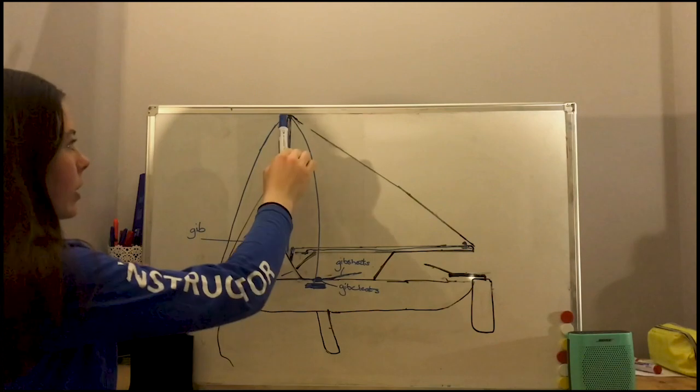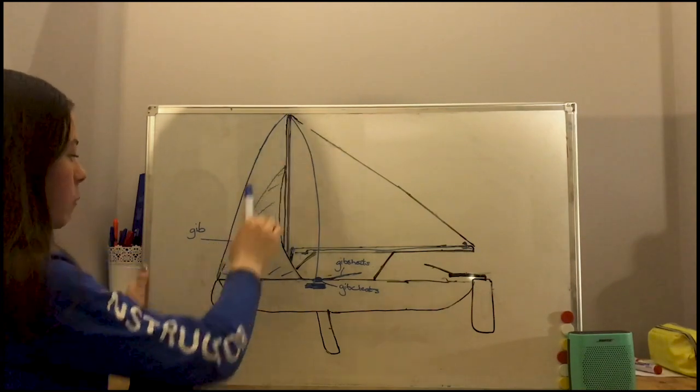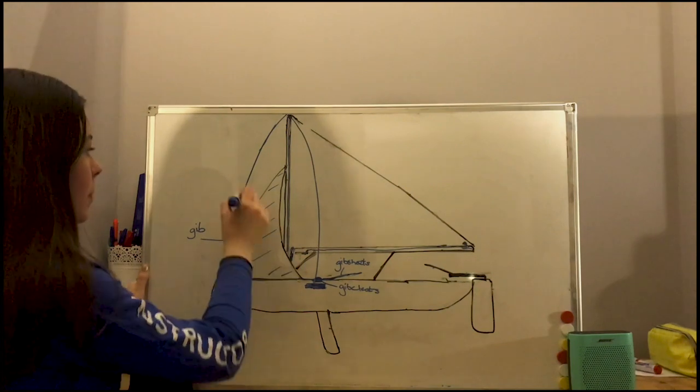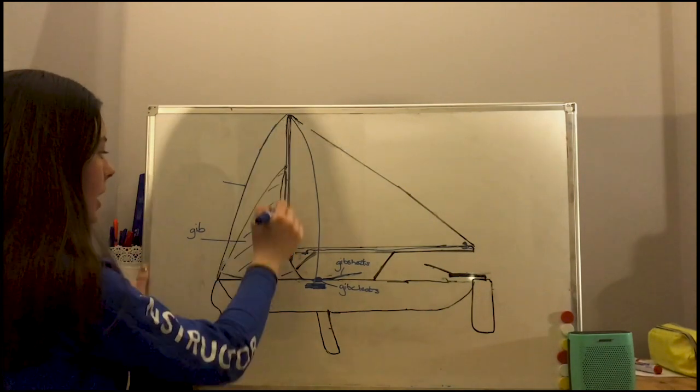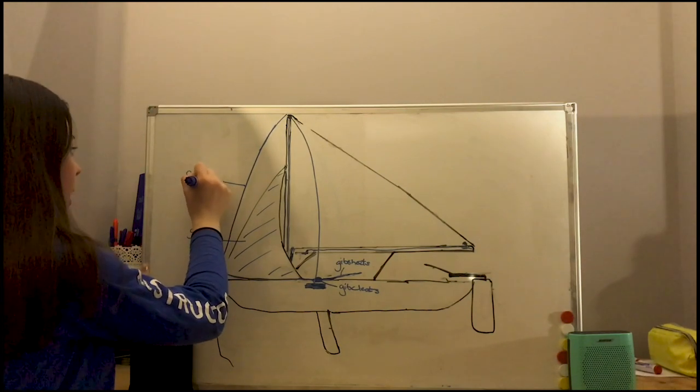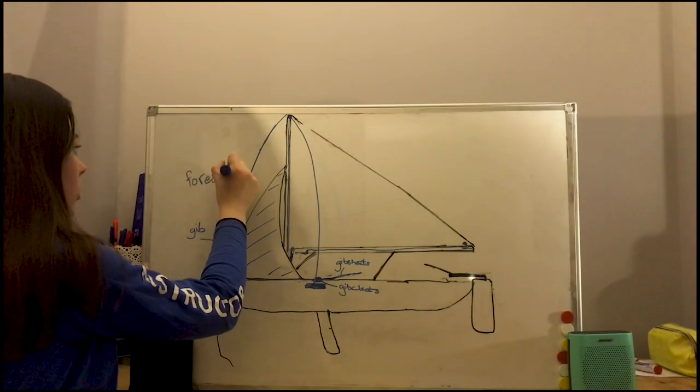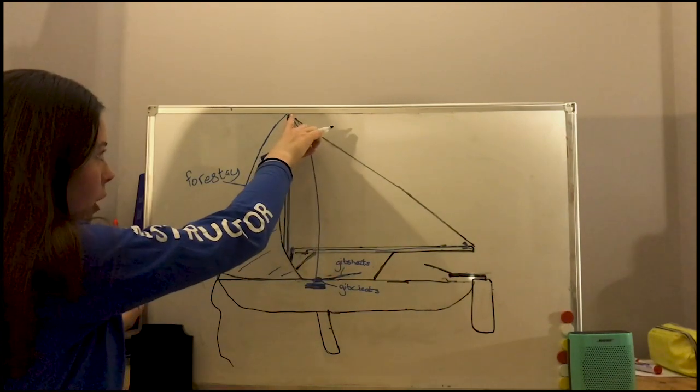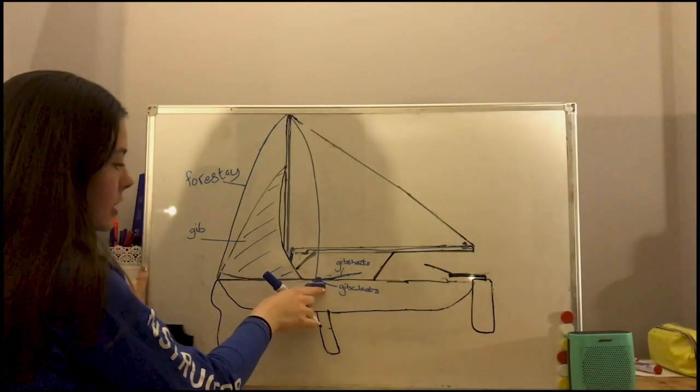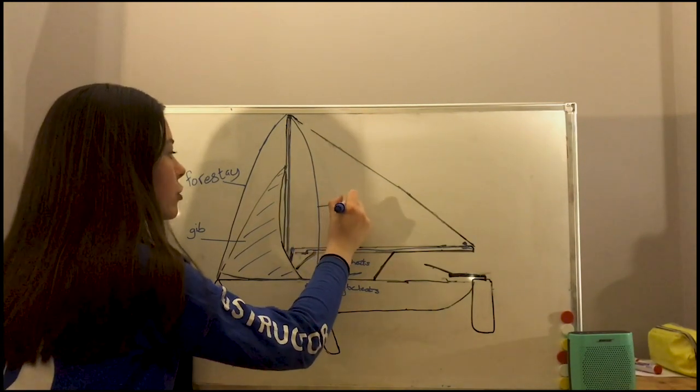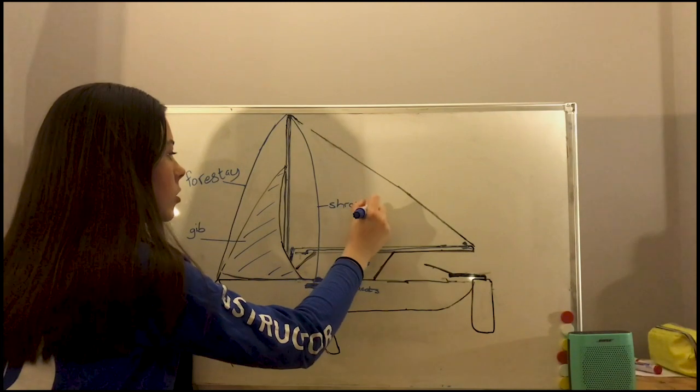Now here we have some differences. So this wire running from the top of the mast to the boat, to the bow of the boat. This keeps our mast upright and pulled forward. This is our forestay. And then over here we have another wire running from the top of the mast to the side of the boat and one on the other side. And these are called our shrouds.